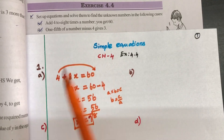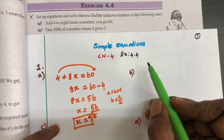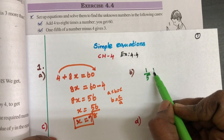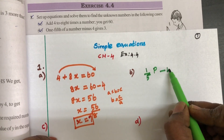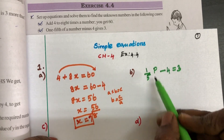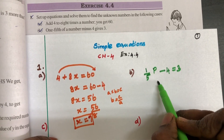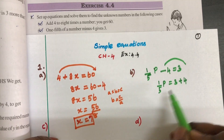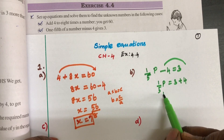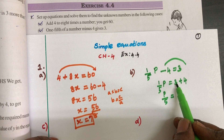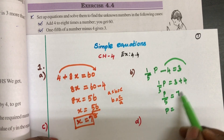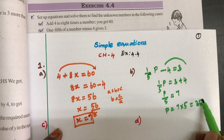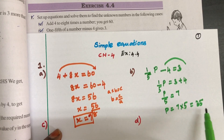B: One-fifth of a number minus 4 gives 3. So 1/5 of a number — we don't know the unknown, so let's have it as P. 1/5 P minus 4 equals 3. Keep the variable term on the left side: 1/5 P equals 3 plus 4, which is 7. So P equals 7 into 5 by cross multiplication, giving P equals 35.